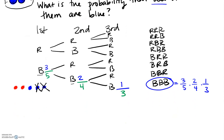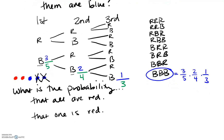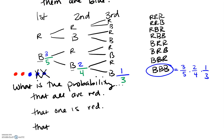There are a lot of other questions we could be asked as opposed to just all of them blue. With this tree in place, I'm going to give you a couple to try on your own. What is the probability that all are red? Let's also do one that is red. And let's do not all are blue. Go ahead, pause the video and see if you can figure out those probabilities using this tree.